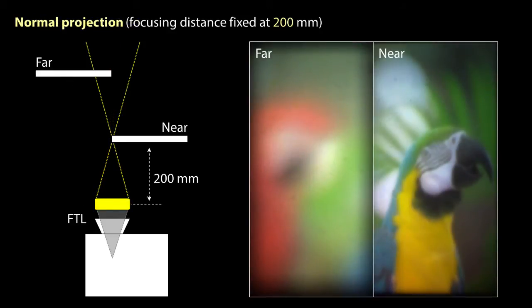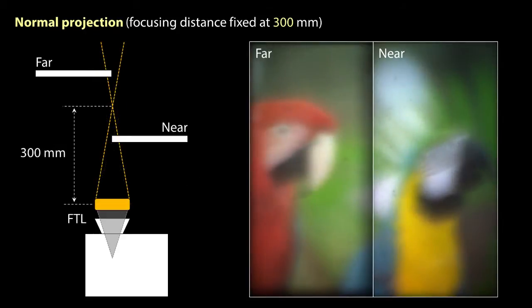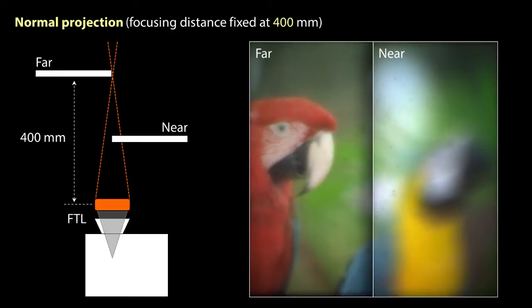Focal sweep projection provided a focused image on both surfaces, while normal projection produced images that were either focused on only one surface or were out of focus on both surfaces.